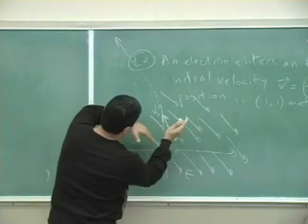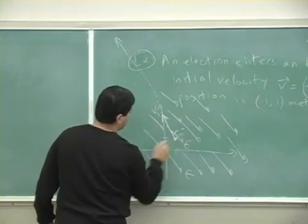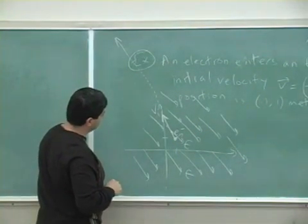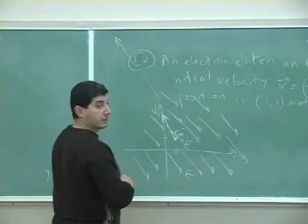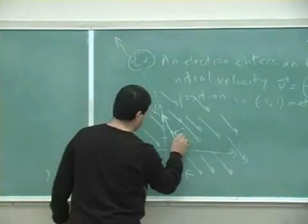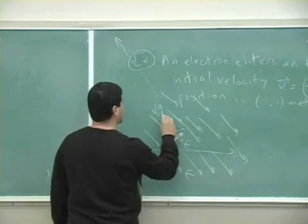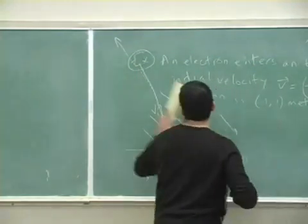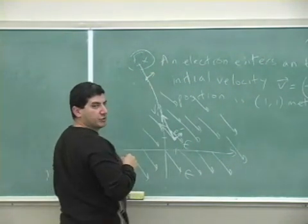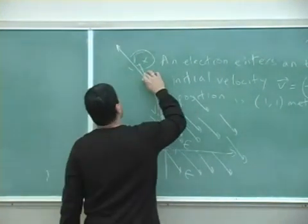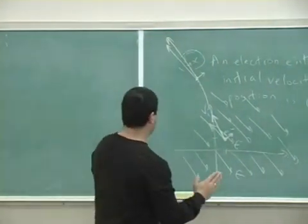Initially it's got some velocity in this direction. If the E field is constant, we can use constant acceleration equations. The perpendicular component of the velocity is not affected — it's only the parallel component of the velocity that's affected. So this component of velocity should keep growing. By the time it gets here, it's got the same perpendicular component, but the parallel component has grown. So the velocity looks more like that, and its path looks like that.